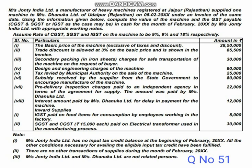Messers John T. India Limited, a manufacturer of heavy machines registered at Jaipur, Rajasthan, supplied one machine to Messers Danuka Limited, Udaipur — that is also Rajasthan. The supplier is in Rajasthan and the recipient of the supply is also in Rajasthan. So this is intra-state. Remember, intra-state.